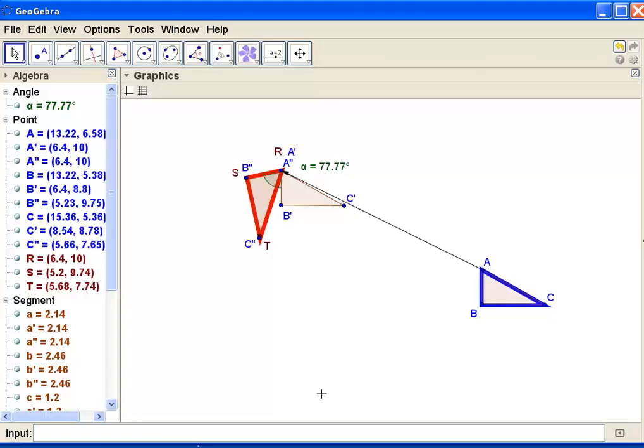So my first transformation was a translation using vector A to R. My second transformation was a rotation clockwise from B prime to R to S. Have a great day.